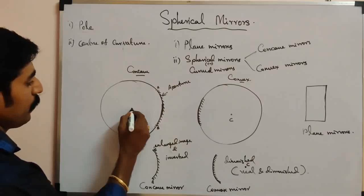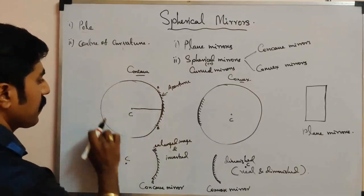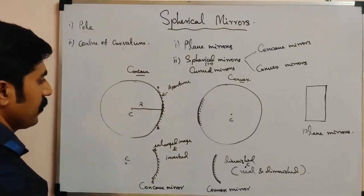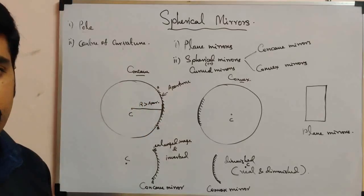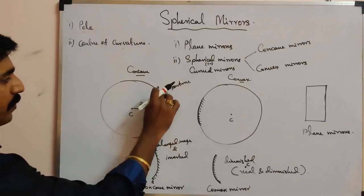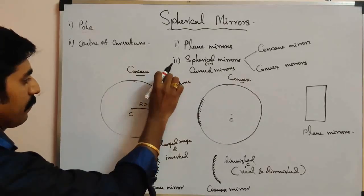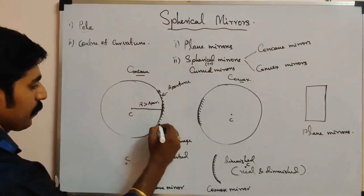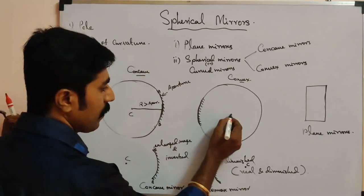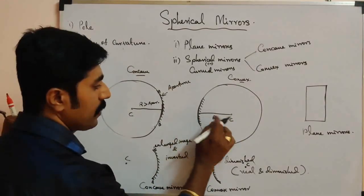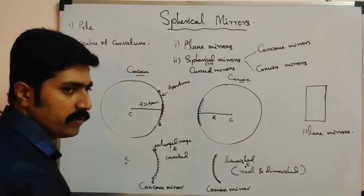The distance from the reflecting surface to the center of curvature is called the radius of curvature. This is the radius of the spherical mirror. The radius of curvature should be greater than the aperture. The distance between the pole and the center of curvature is called the radius of curvature.